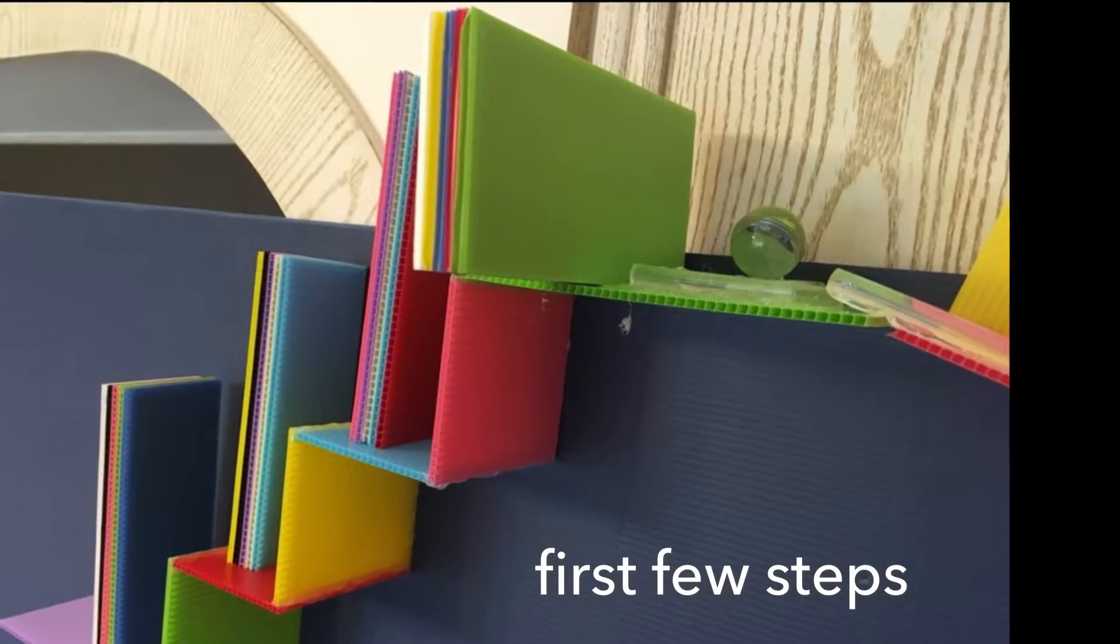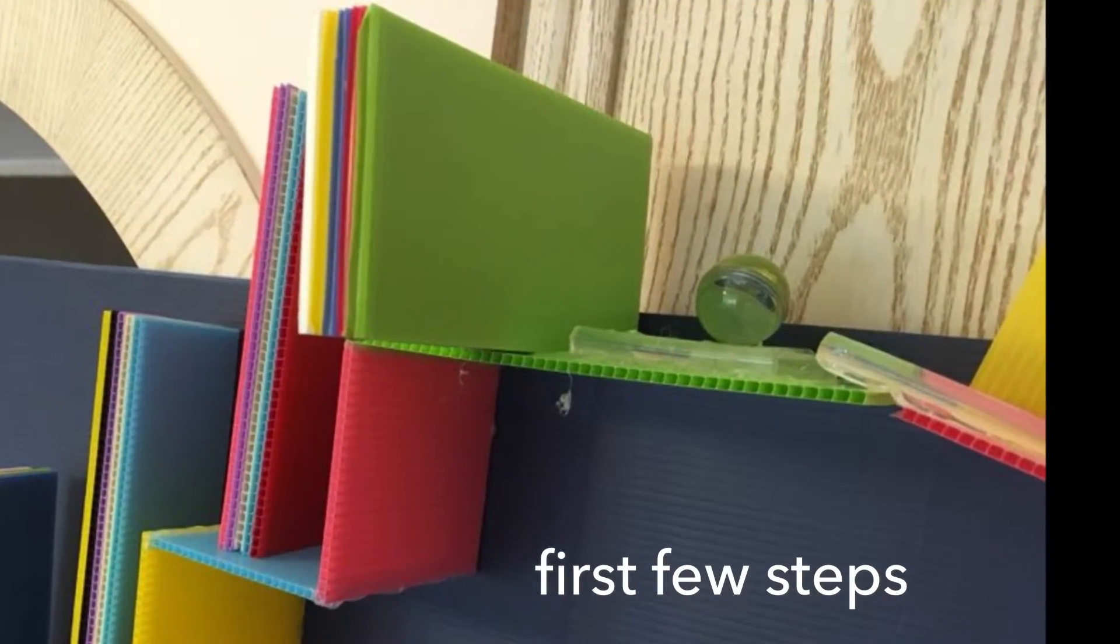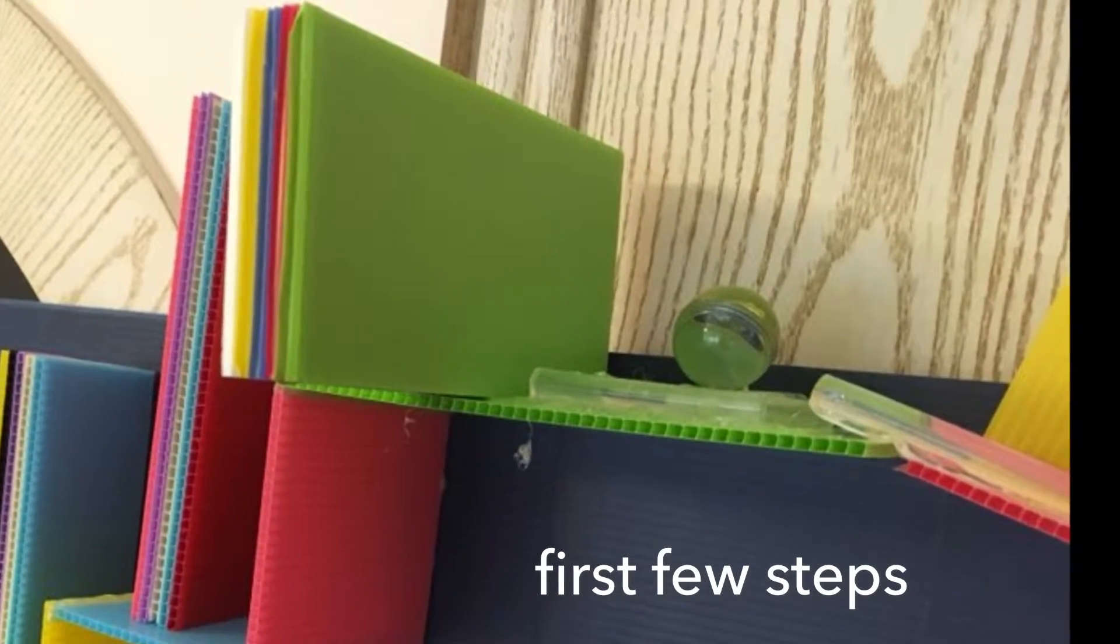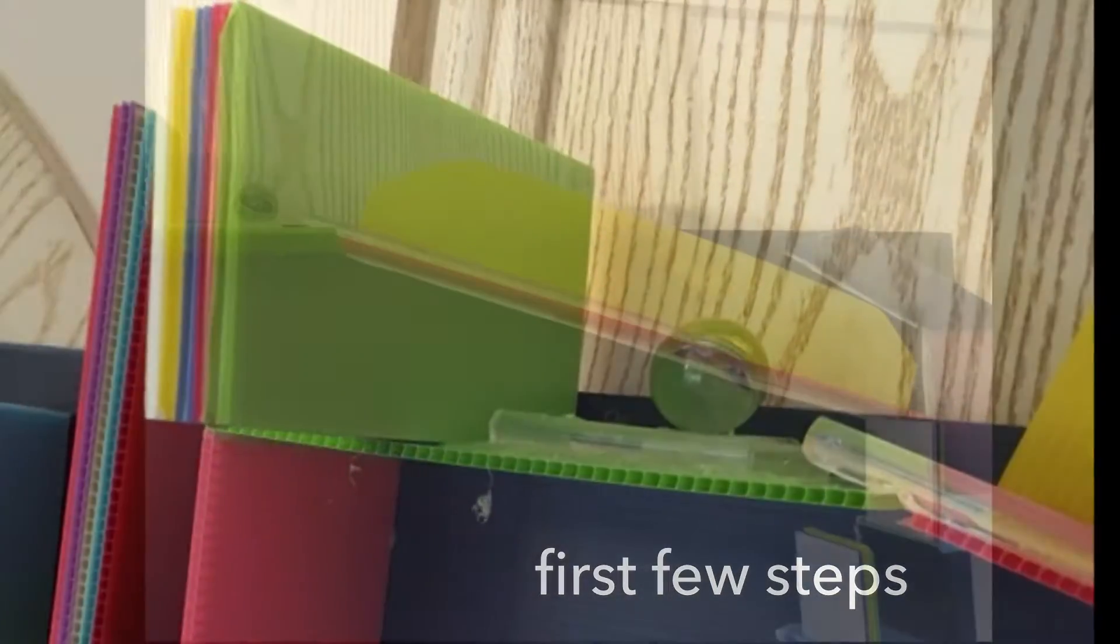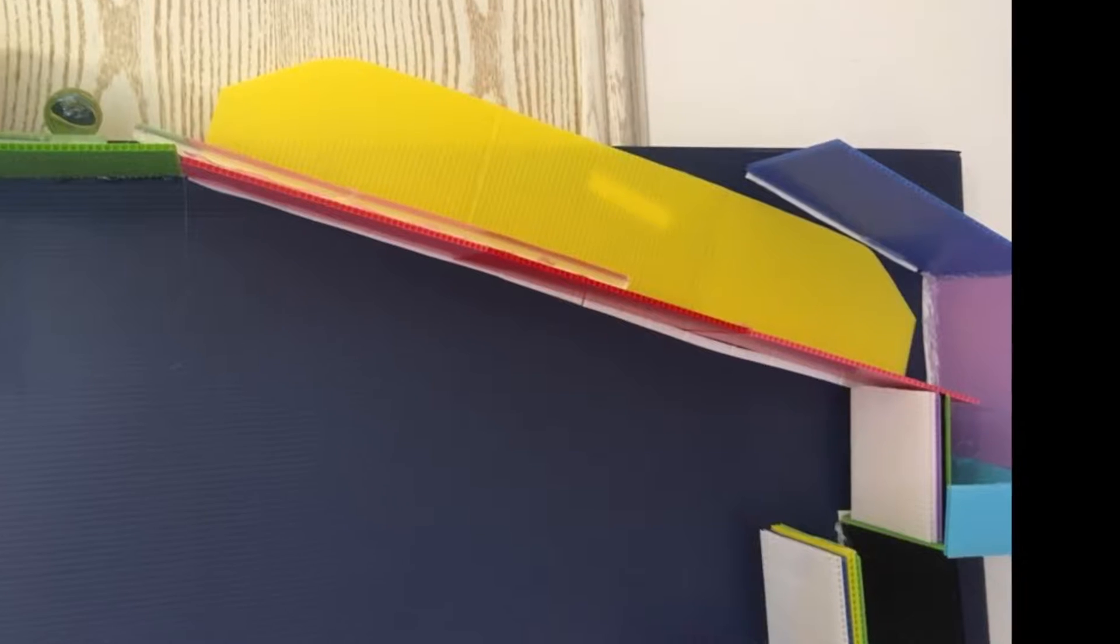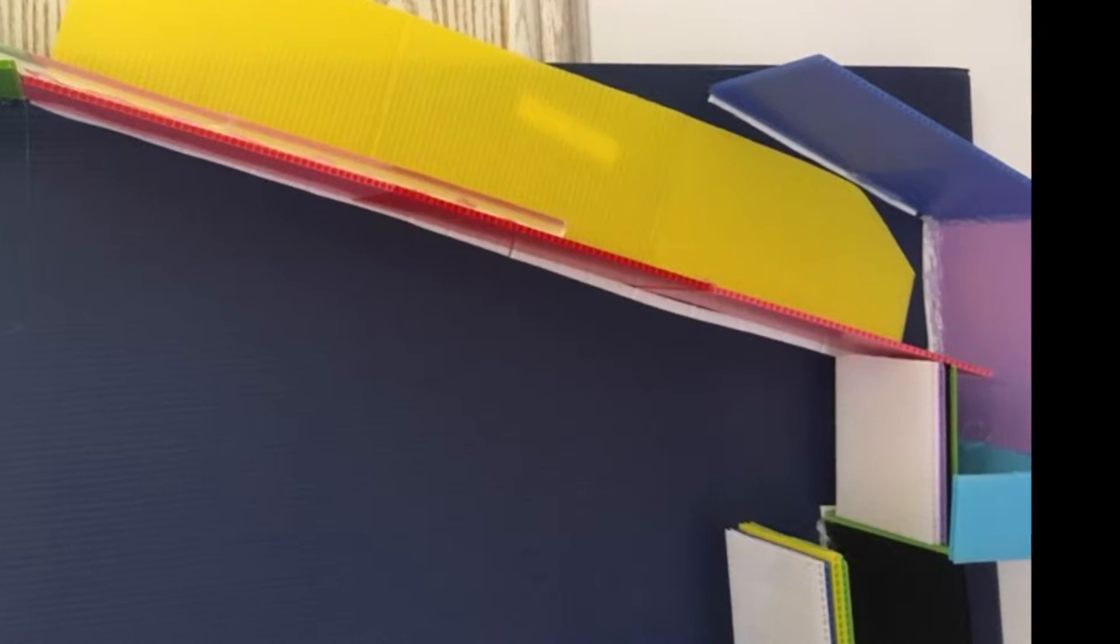In the beginning I'll push the first domino and it'll hit the second one acting like a chain reaction until it hits the marble sitting on the end. Then the marble will slide down a ramp and hit the first domino on the staircase.